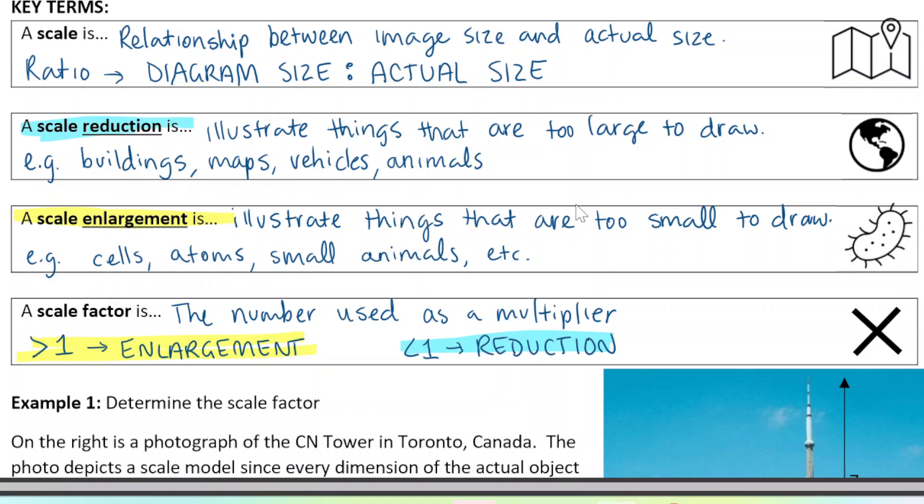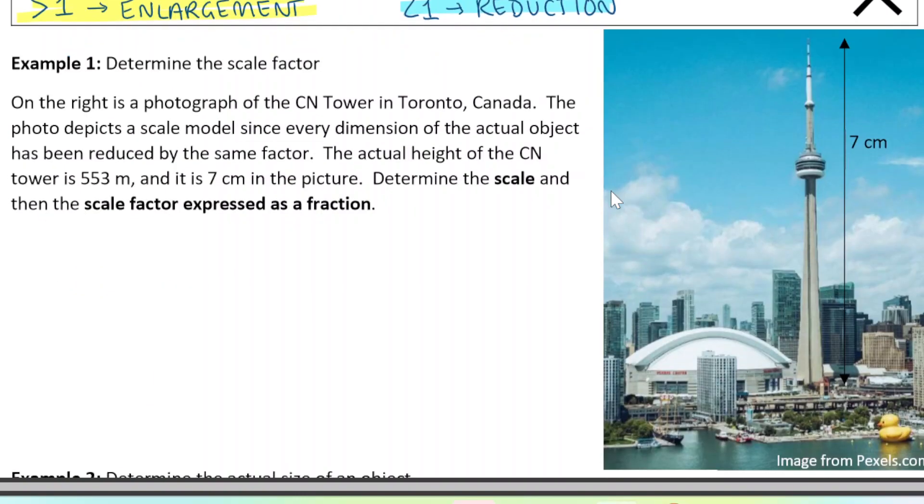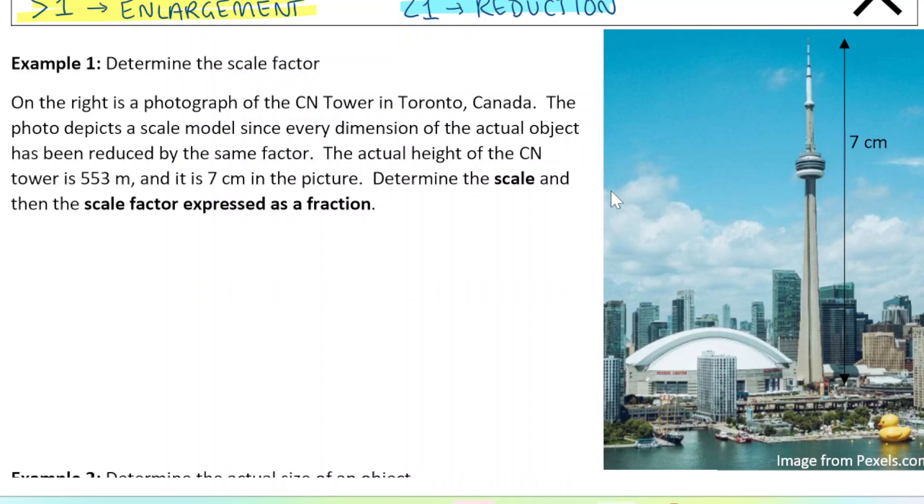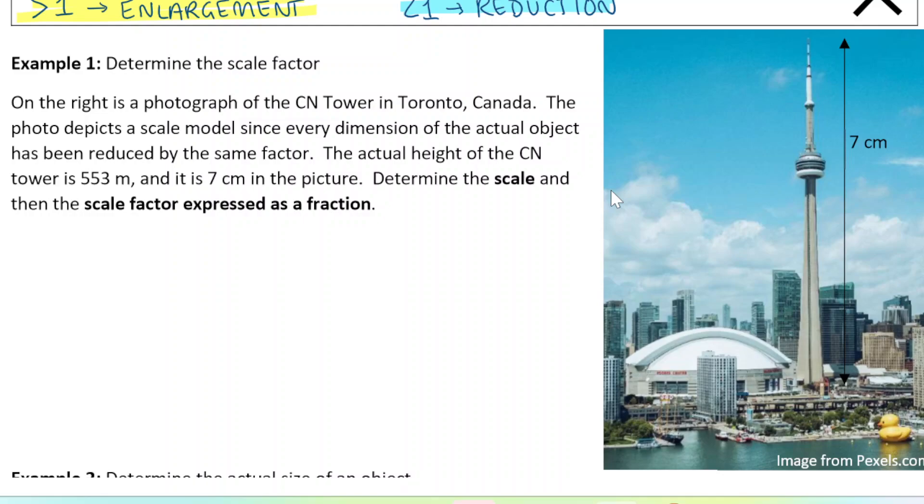Let's have a look at this example. So it says determine the scale factor. On the right is a photograph of the CN tower. The photograph depicts a scale model since every dimension of the actual object has been reduced by the same factor. The actual height of the CN tower is 553 meters, and this is seven centimeters in the picture. Determine the scale and then the scale factor expressed as a fraction.